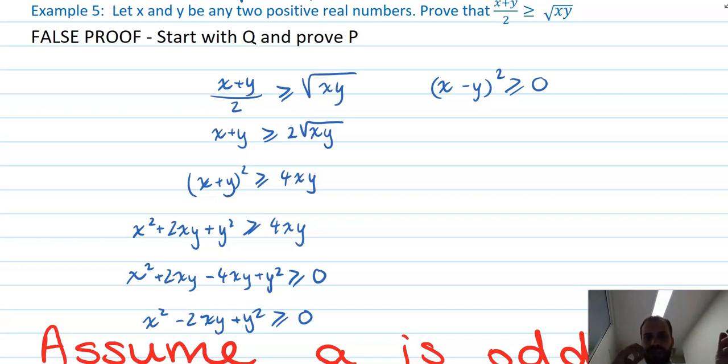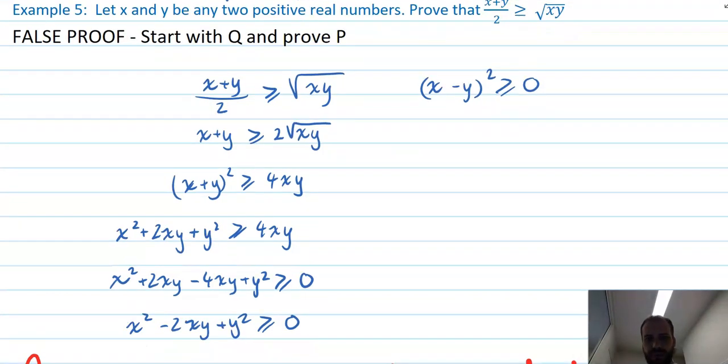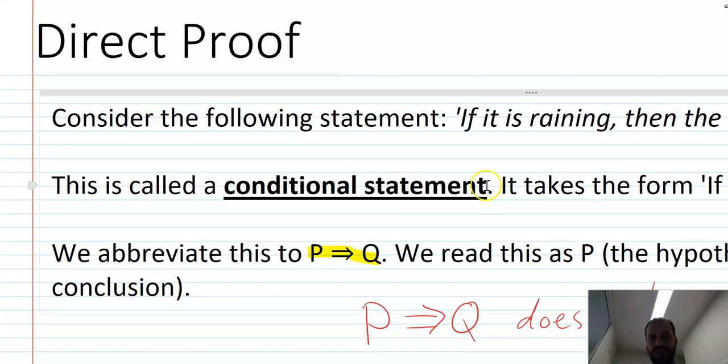This is a false proof because we started at our conclusion Q and we moved towards, we moved towards this hypothesis. But we can fix a false proof and we just do it by rewriting the whole false proof. Oops. We do it by rewriting the whole false proof backwards. We start here, we move here, we move up until we get to Q. Now, as long as we do that, we're fine. And a false proof is a great way to start a proof if you don't know how to get to the end from the start. Instead, start at the end and get to the start. All right. There is, I covered a lot of ground there. That's direct proof.